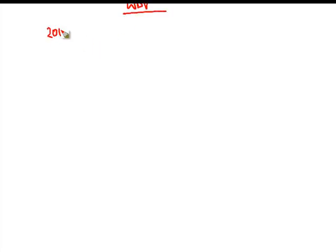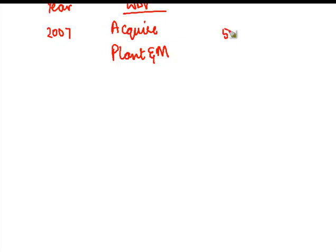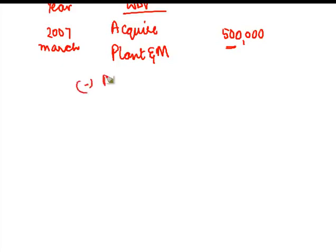Let's say in the year 2007, I acquire plant and machinery for rupees 5 lakh. The rate of normal depreciation is 10%. Assuming this plant and machinery has been in use for greater than 180 days, I will apply the rate of 10% and charge depreciation. So my depreciation for 2007 will be 10% of 5 lakh, which is 50,000.